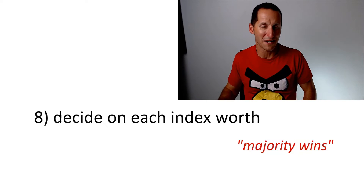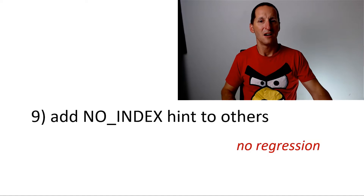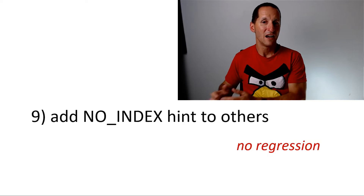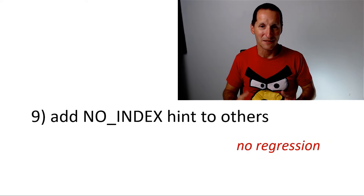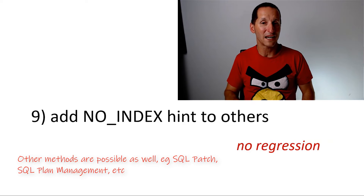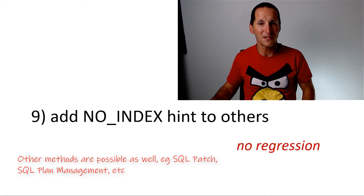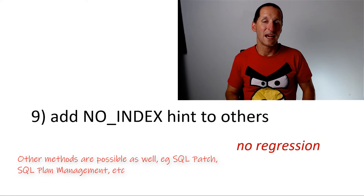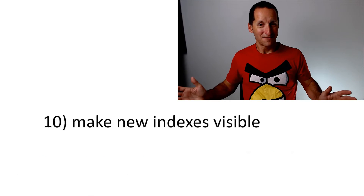That's where step eight comes in: deciding on the worth of each index. What if creating one index makes three SQLs better but makes three other SQLs in my list worse? Now I'm in a balancing act. If it's really important that those three SQLs benefit, I can keep the index invisible and then visit all the SQLs that will regress - adding a NO_INDEX hint to ensure they don't pick up that index when it becomes visible. That way I get the best of both worlds: the benefiting SQLs improve, and the regressing SQLs are protected by hints.